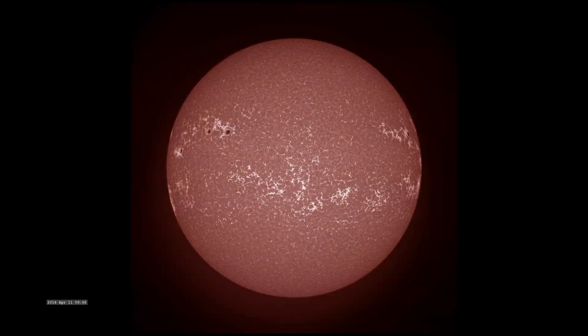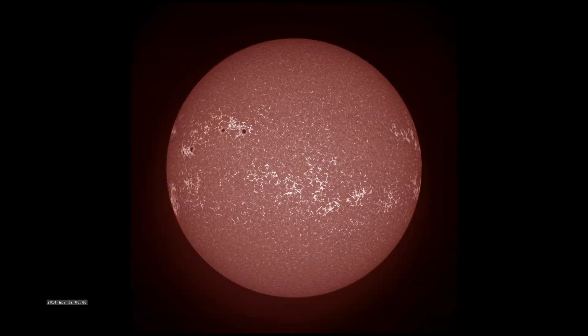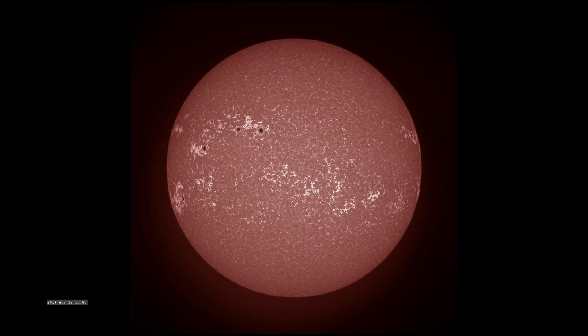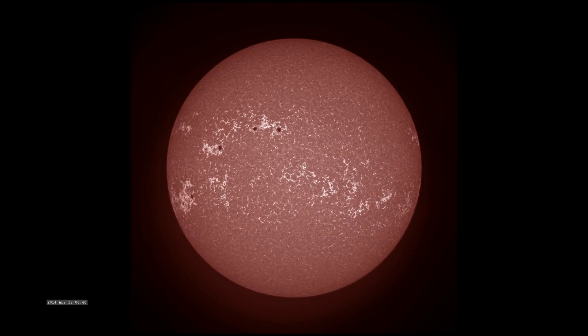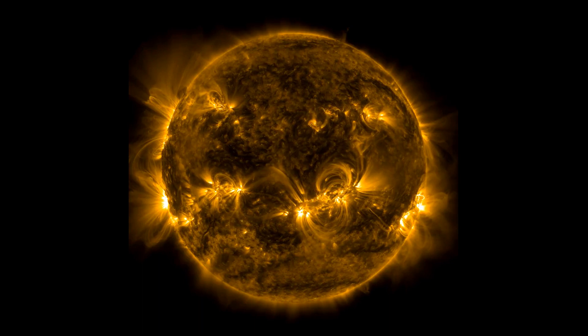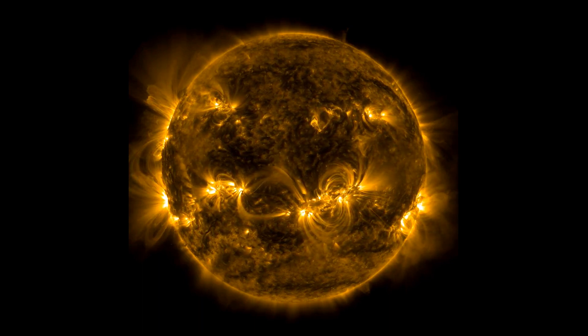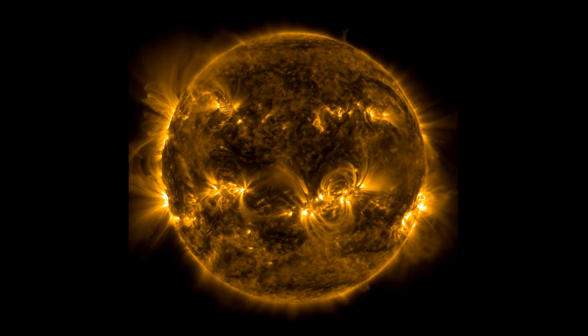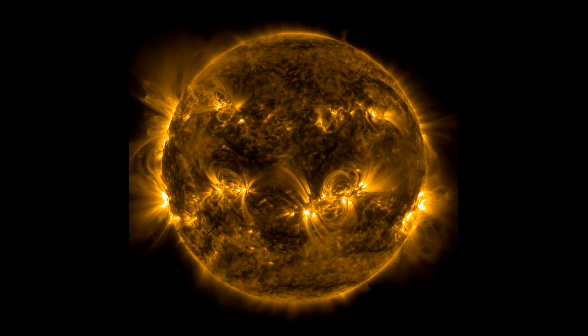The flare was produced by Sunspot AR-3234, which is a region of intense magnetic activity on the Sun's surface. This sunspot has been active for several days, producing several smaller flares before the M8.6-class event occurred.